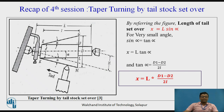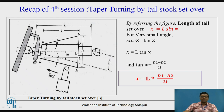In the quick recap of the fourth session, we learned taper turning by tailstock setover — after loosening the screw provided in the tailstock, you can slide the tailstock either away from the operator or towards the operator. This gives an angle to the workpiece, and the tool moves parallel to the axis of rotation. By relative motion between the tool and the workpiece, you get the taper turning operation.